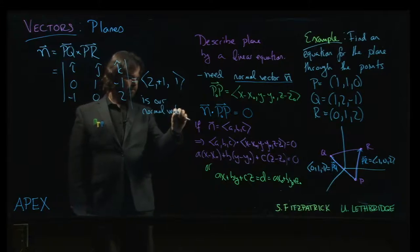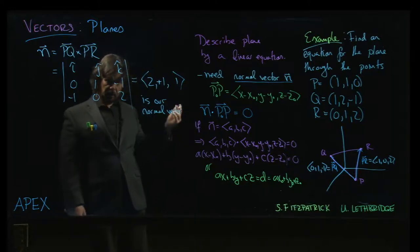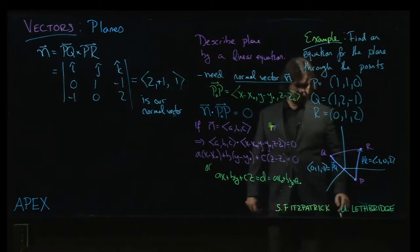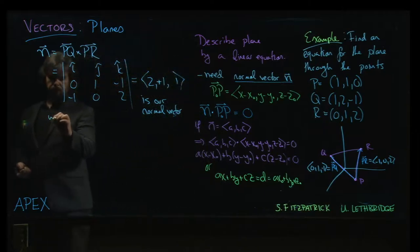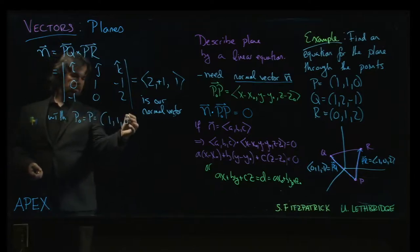Next thing we need is a point in the plane, and we have three to choose from. We can take P, Q, or R. We've kind of been using P as the reference point, so maybe we'll stick with that. And so, we'll take P0 to be P, which is one, one, zero.